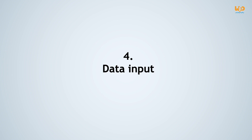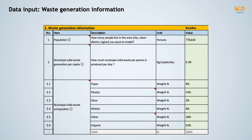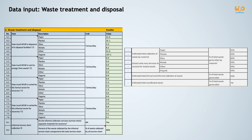Now that the local experts have gathered all the needed baseline data and carried out their observations, they are able to fill in the waste flow diagram Excel sheet. The waste generation information was obtained from the WACT assessment and an interview with the municipality to know the population. If you want to take a more detailed look at this slide or the following ones, feel free to press the pause button. The values for waste treatment and disposal are shown here, and the grey cells on the right show you the results computed by the waste flow diagram Excel sheet.